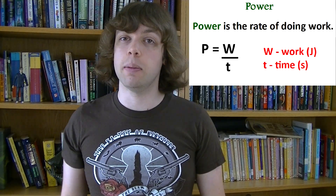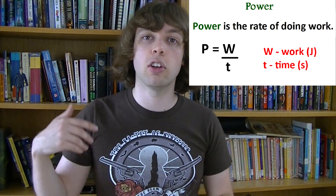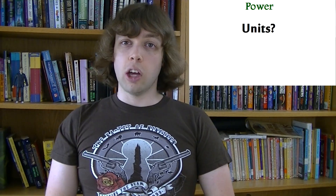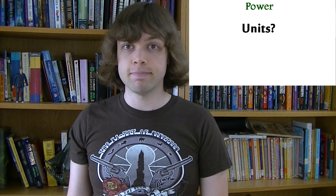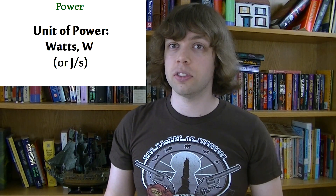Last new term of the day: power. Power isn't too bad if you already understand work. Power is how quickly you're doing work — it's the number of joules of work you do per second. It's how quickly you're transferring energy. So the equation for it is work divided by time: the number of joules of work divided by the amount of time, to get the number of joules per second. The unit of power is the watt, otherwise known as the joule per second. For example, a 60-watt light bulb uses 60 joules of energy every second.